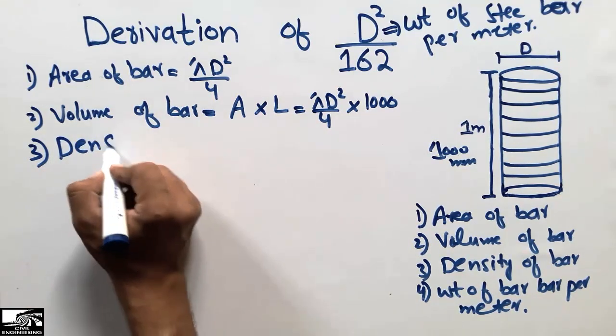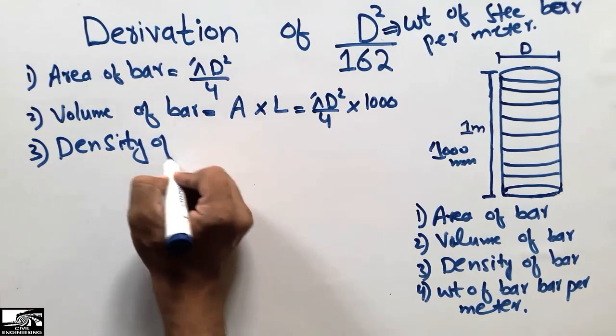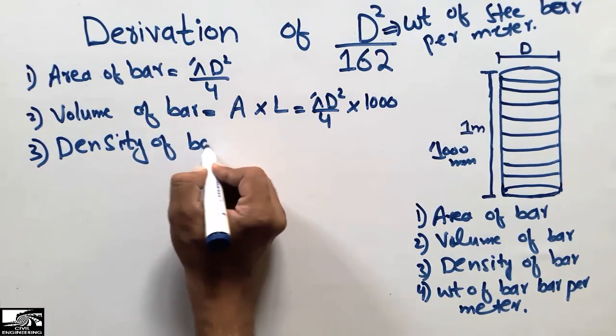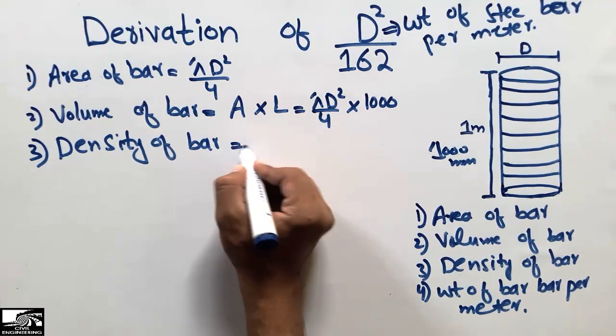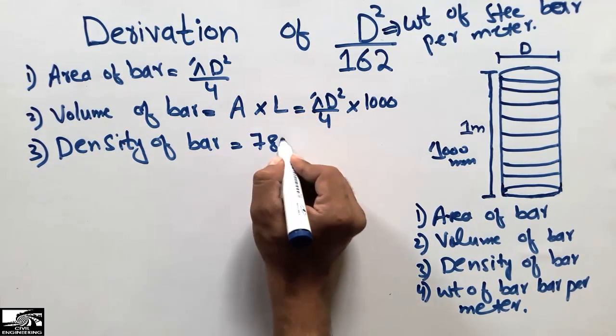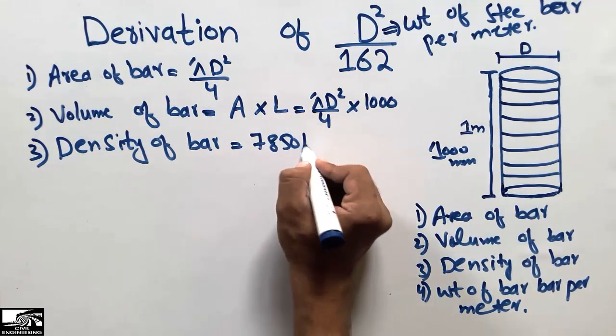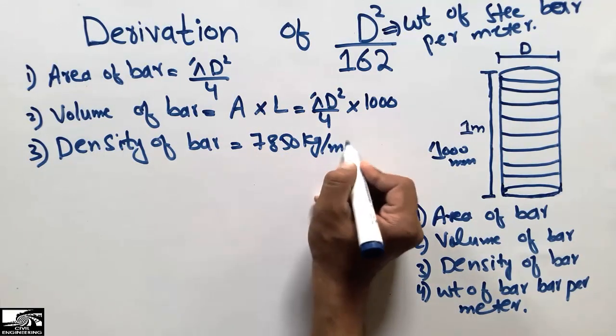The third step is to find the density of the bar. The density of the steel bar is known to us: it is equal to 7850 kilograms per cubic meter.